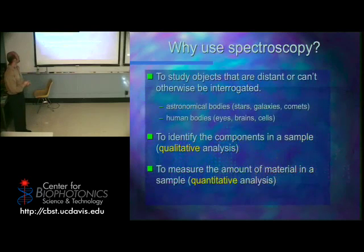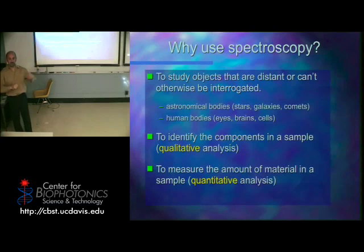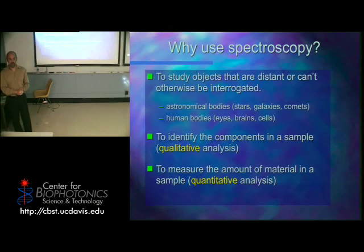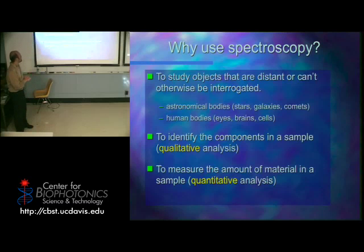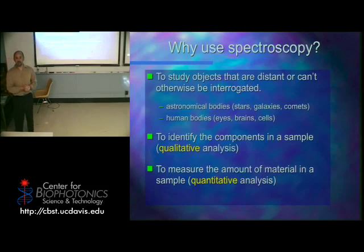Why do we use spectroscopy? We use it to study things that are either too far away or can't be easily interrogated otherwise. A great example is stars — we want to find out what gases are on a star, what temperature it is, but we can't send a probe out there. The closest star is our sun, and the next closest is farther than we could travel in our lifetimes. We can also find out things about our body — what's happening in the eye, in the brain, and in cells, by interrogating them with light.